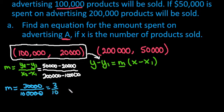Or if you would rather work with it as a decimal, you could also put it in as 0.30. Either way is acceptable. So now what we're going to do is replace m with 3 tenths, replace y1 with 20,000, and replace x1 with 100,000.